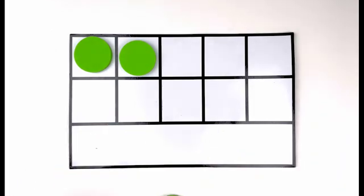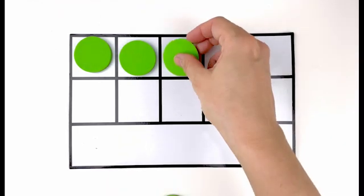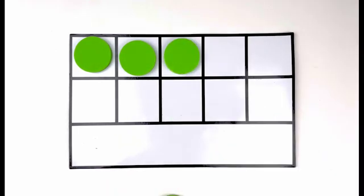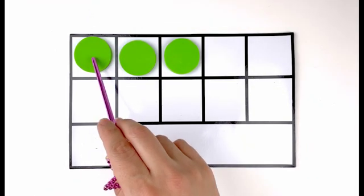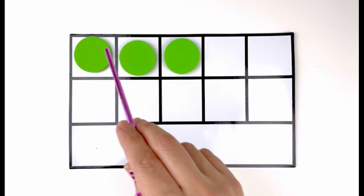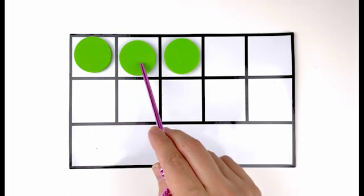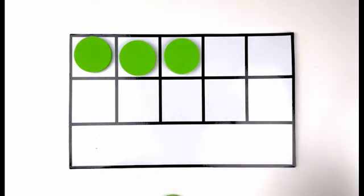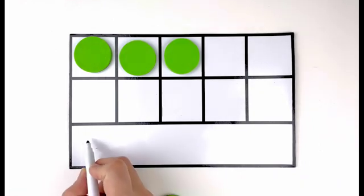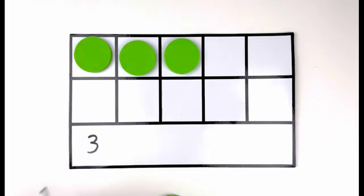Two. Let's add another one. How many green circles do you see? Let's count. One, two, three. Three green circles. Number three.